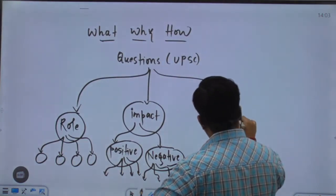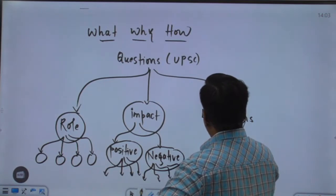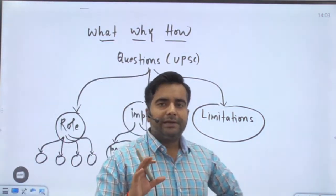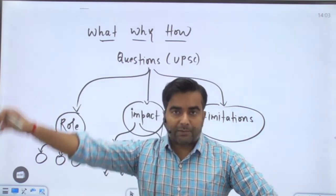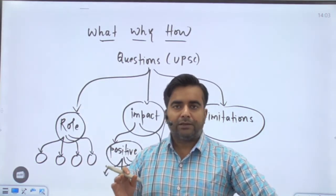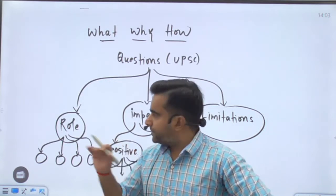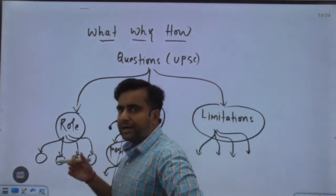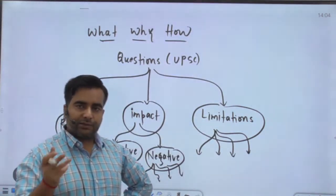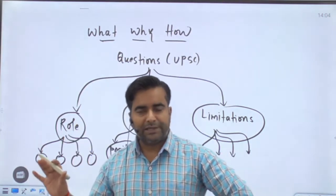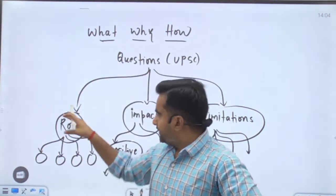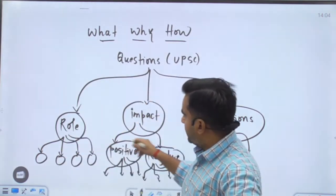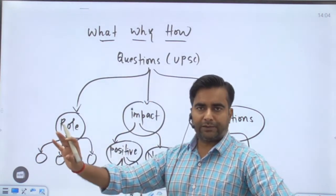The third thing that has always been in focus is limitations. Any law, office, or institution has a limitation — based on interpretation of the constitution or based on practical things happening on the ground. If you understand these three aspects — role, impact, and limitation — for any topic you are reading, you'll be able to write the answer. When preparing Indian polity and constitution for mains, you just have to prepare these three things.